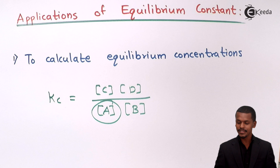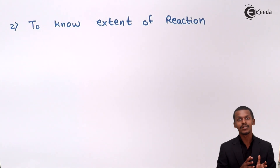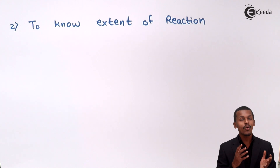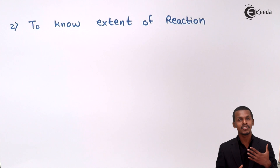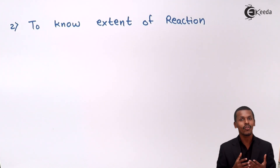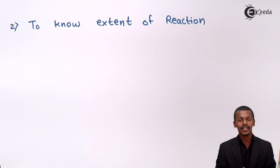Now let us move on to the next application: the equilibrium constant gives us an idea about the extent of the reaction. When we talk about a reversible reaction going in a forward or backward direction, how can we determine whether the reaction has been completed or to what extent? The equilibrium constant helps us predict whether the reaction has completed, is going backward, or is at equilibrium.